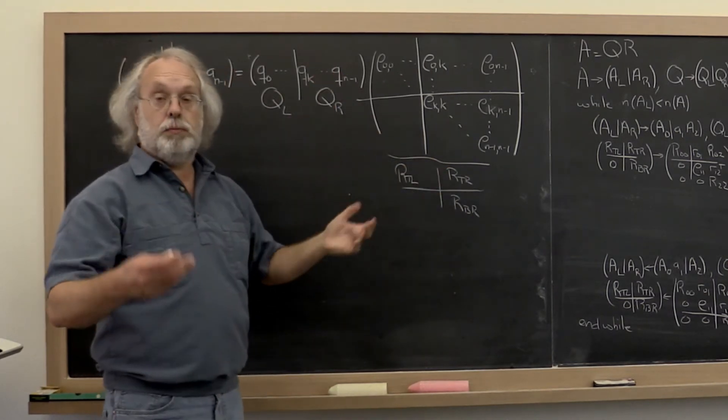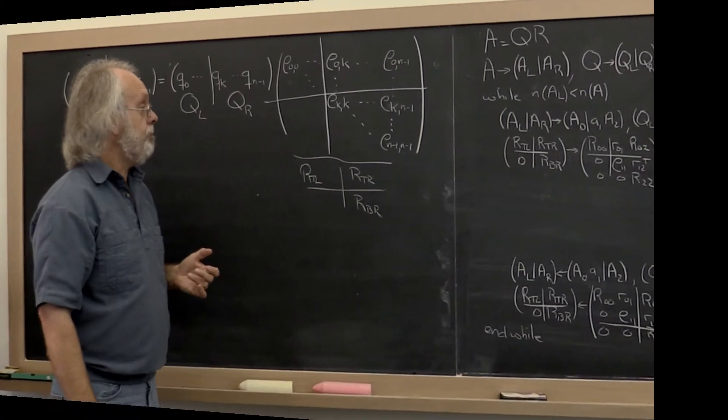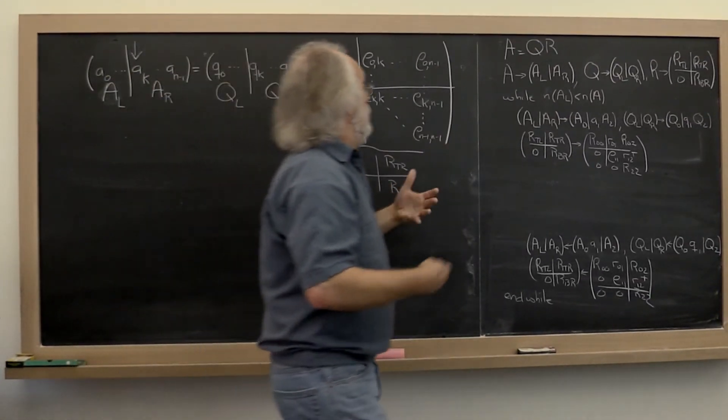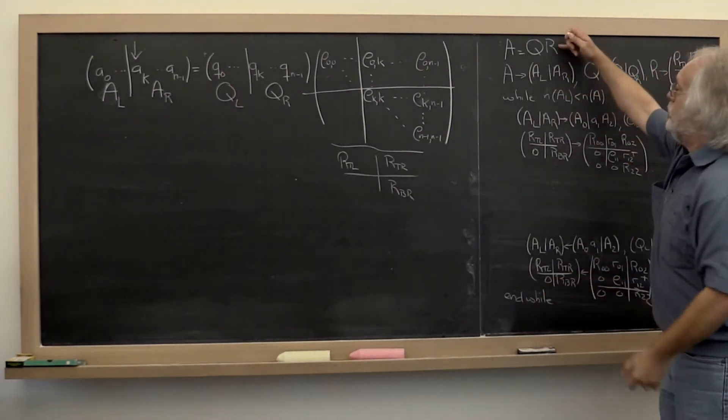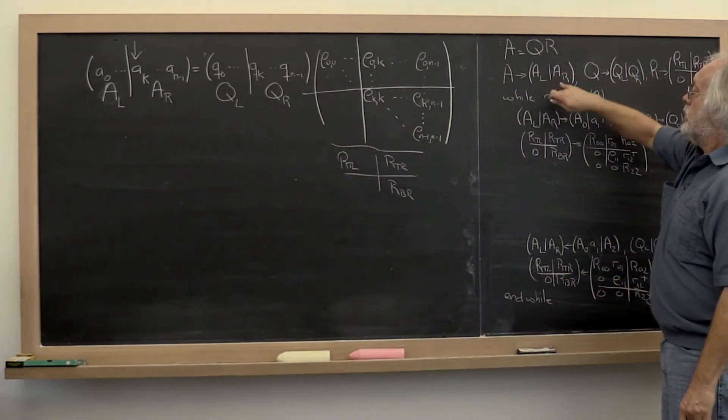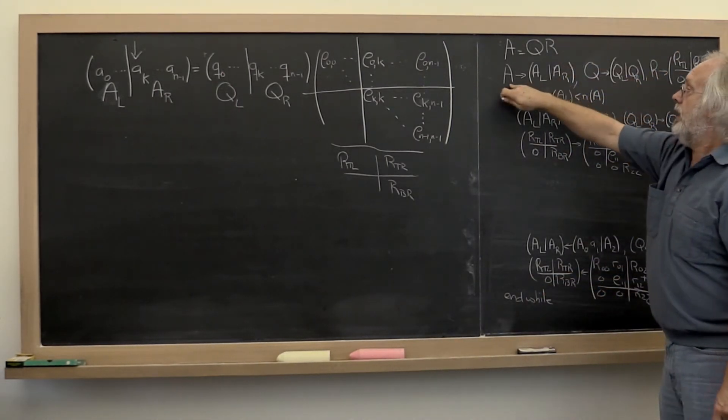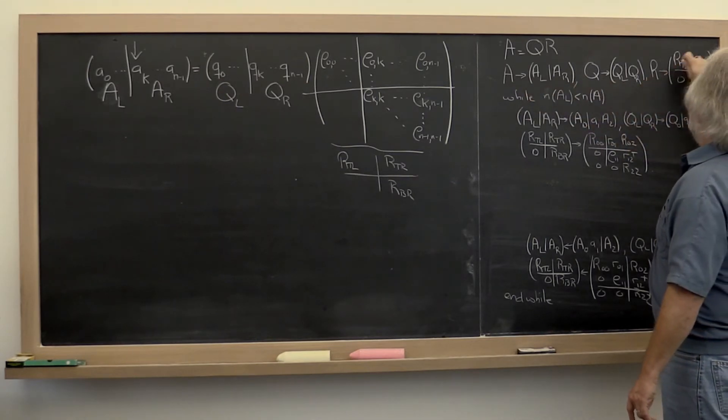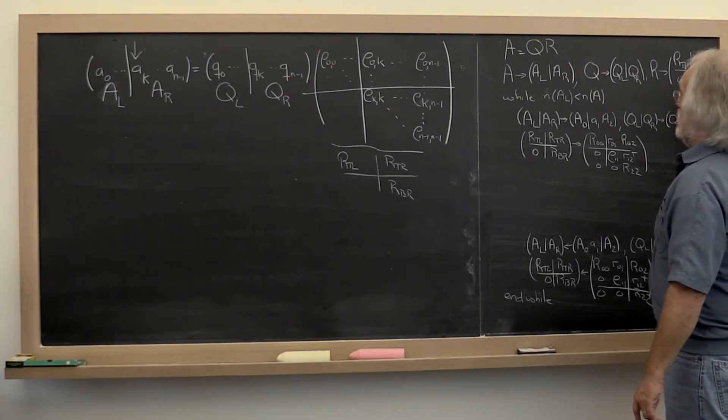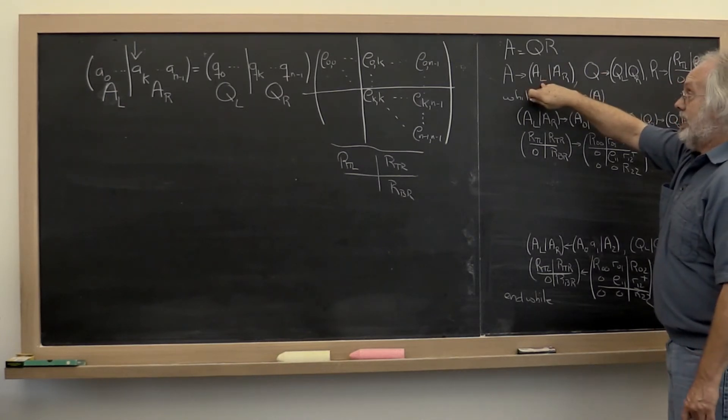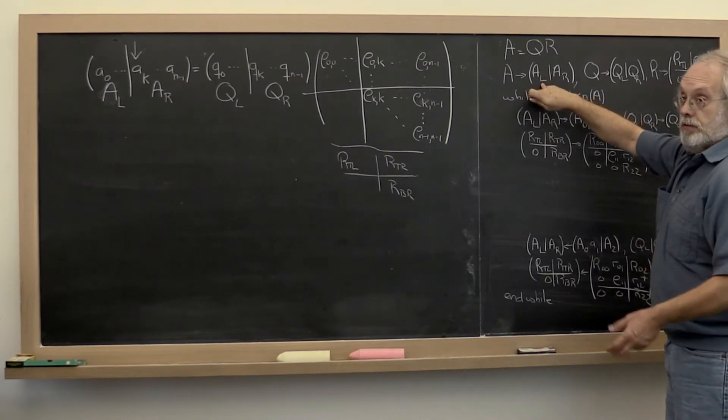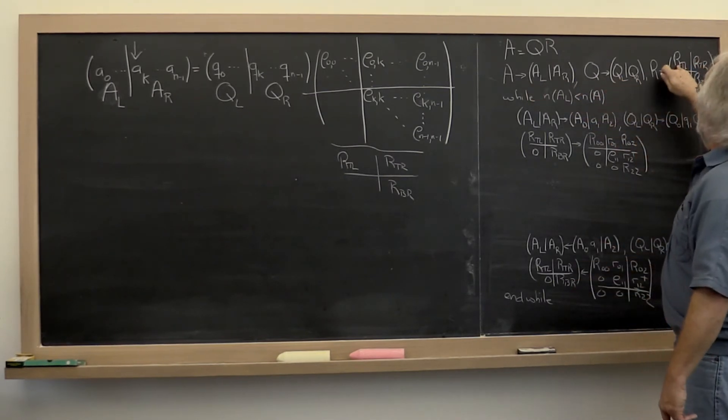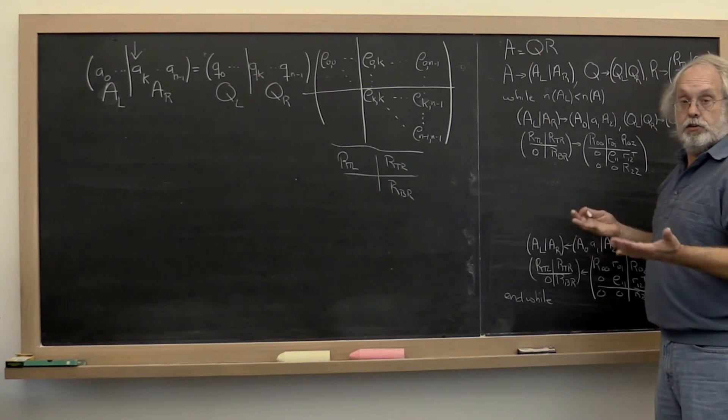The other parts still need to be computed. So in an algorithm we could say we want to compute A equals QR. So we start by partitioning A into left and right, Q into left and right, and R into top left, top right, bottom right. Where A left initially has no columns because no columns have been processed. Q left has no columns and R top left initially is 0 by 0.